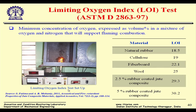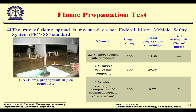The flame propagation test is performed as per FMVSS (Federal Motor Vehicle Safety Standards). For a 100 mm sample, the rate of flame propagation is 9.7 mm/minute, and it self-extinguishes around 7 times. We use a fire retardant treatment to make it self-extinguishing.